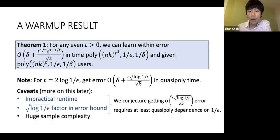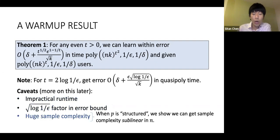Regarding the √log(1/ε) factor, we actually conjecture that getting better than this requires at least quasi-polynomial dependence on 1/ε, and we have good reason to believe this because a similar picture arises in robust mean estimation for Gaussians. Regarding sample complexity, as I'll describe later, when we place additional assumptions on the distribution p, we can get dramatic sample complexity savings.